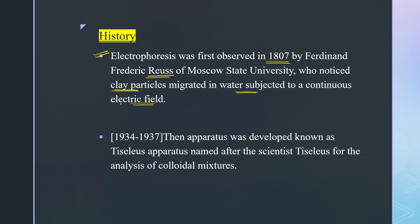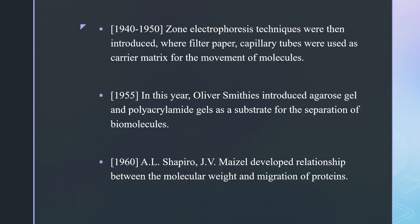In 1937, the apparatus of electrophoresis was developed. This included a buffer chamber in the water chamber and a gel plate — everything together known as the Tessilus apparatus, named after the scientist Tessilus, designed for the analysis of colloidal mixtures.